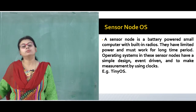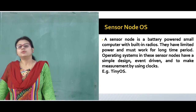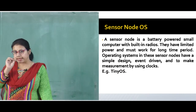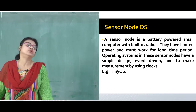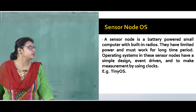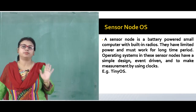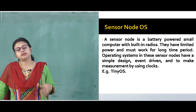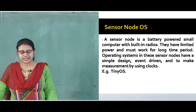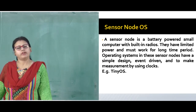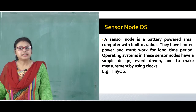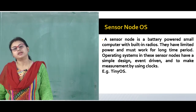The next popular type is the sensor node operating system. A sensor node is a battery-powered small computer with built-in radios. They have limited power and should be capable of working for long times. The operating systems in these sensor nodes have very simple design — they must be event-driven and make measurements using clock time periods. An example is TinyOS.